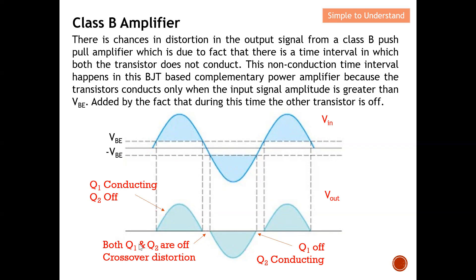This potentially creates a crossover distortion — an undesired effect of Class B amplifiers. Because both transistors Q1 and Q2 are off during this interval, one transistor handles one half cycle and the other handles the other half cycle, but due to the voltage required to turn on each transistor, there is a short interval where both Q1 and Q2 are off, resulting in crossover distortion, which is undesired.